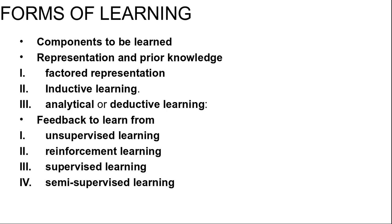Next, representation and prior knowledge. We have seen several examples of representations for agent components, like propositional and first-order logic sentences for logical agents. Effective learning algorithms have been devised for all these representations. A factored representation means a vector of attribute values, and outputs can be either continuous numerical values or discrete values.